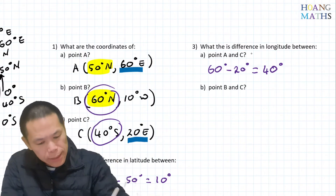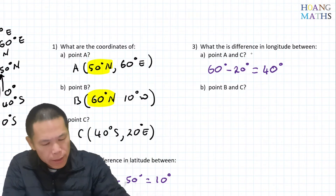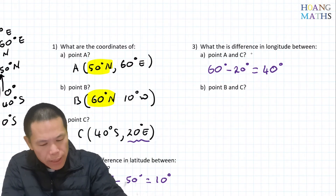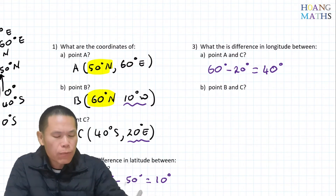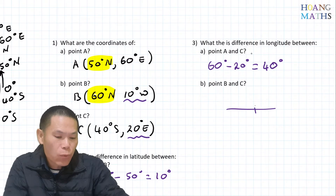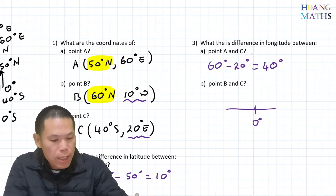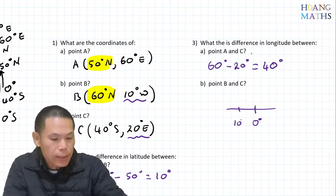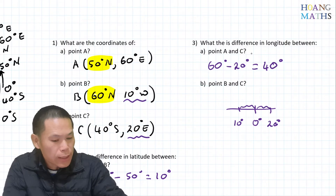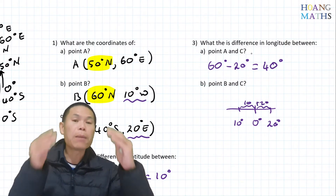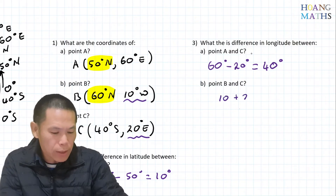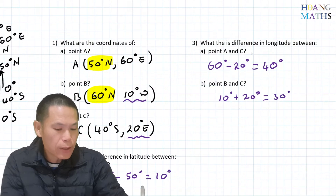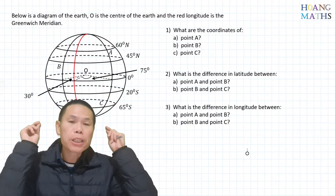Now the longitude difference between point C and B. Point C is 20 degrees east and B is 10 degrees west — one is west, the other is east. We add them. You can draw a diagram: Greenwich meridian is zero, B is 10 degrees west, C is 20 degrees east. So the difference is 10 plus 20, which equals 30 degrees.